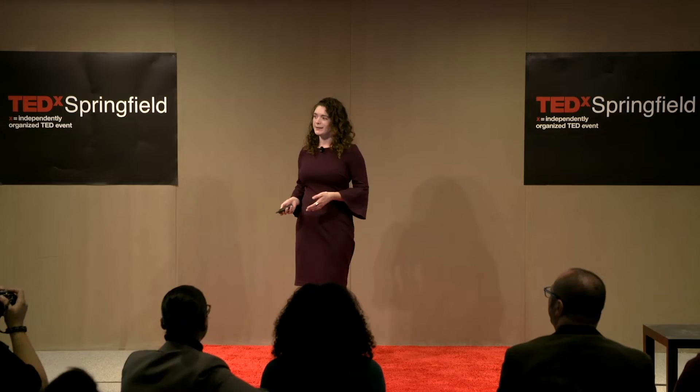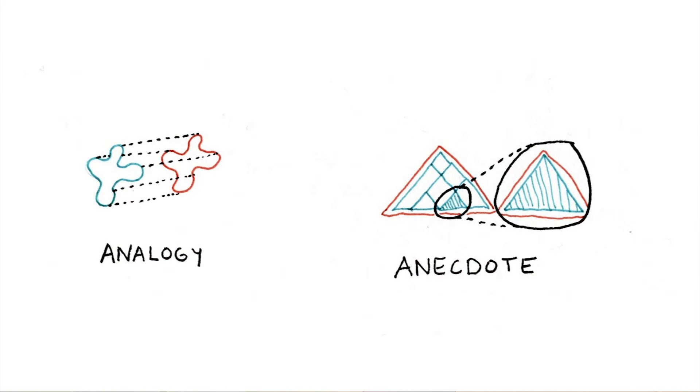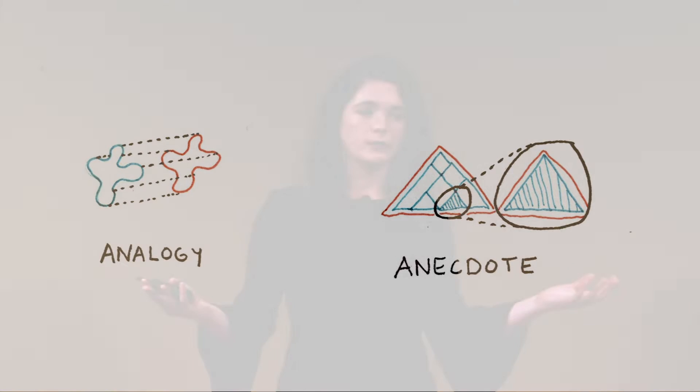How do we explain an abstract idea? Analogies are helpful because they allow us to take something abstract and map it to something concrete. In that way, we can explain, for example, how electricity moves through a wire by using the analogy of water moving through a pipe.